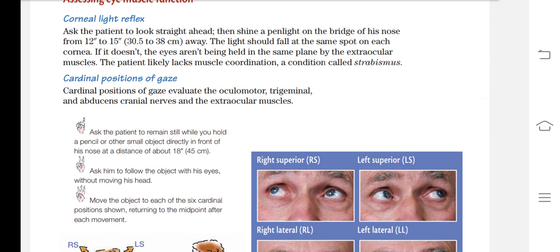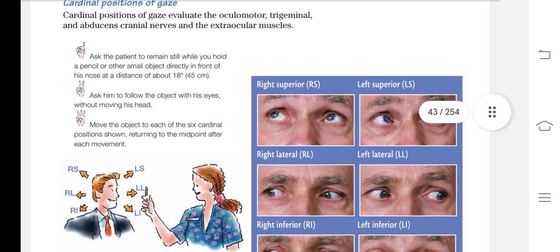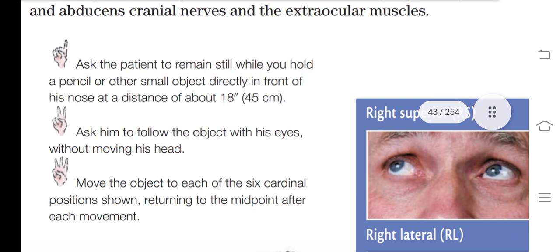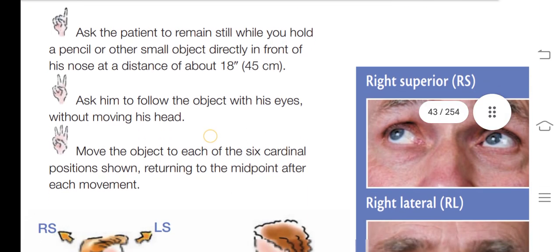The second test is the cardinal position of gaze. This evaluates the oculomotor, trochlear, and abducent cranial nerves and the extraocular muscles. Ask the patient to remain still while you hold a pencil or small object directly in front of their nose at about 18 inches (45 cm). Ask them to follow the object with their eyes only, without moving their head. Move the object through each of the six cardinal positions.